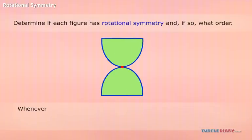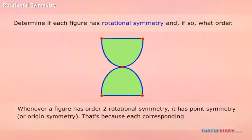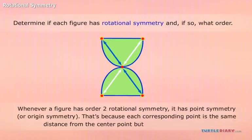Remember that whenever a figure has order two rotational symmetry, it has point symmetry or origin symmetry. That's because each corresponding point is the same distance from the center point, but in opposite directions.